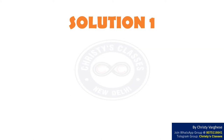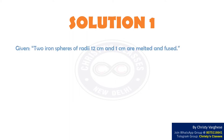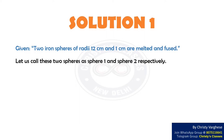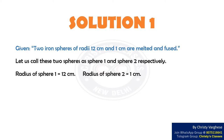Let us consider two solutions for this question. Solution 1: Given that two iron spheres of radii 12 cm and 1 cm are melted and fused, let us call these two spheres as sphere 1 and sphere 2 respectively. Radius of sphere 1 equals 12 cm, and radius of sphere 2 equals 1 cm.